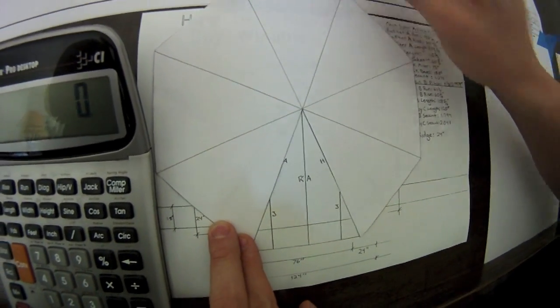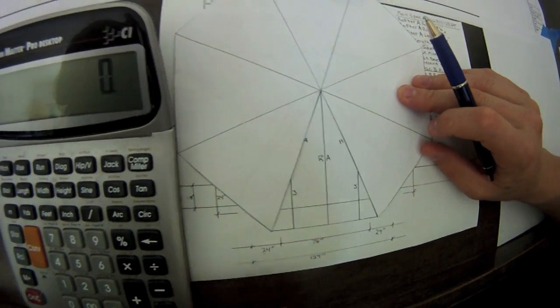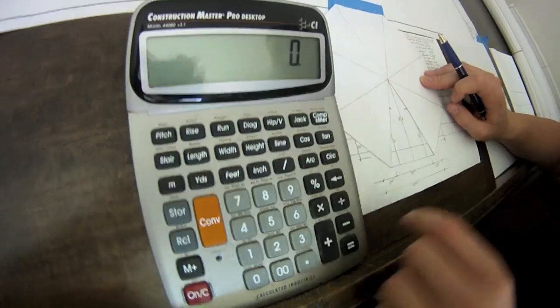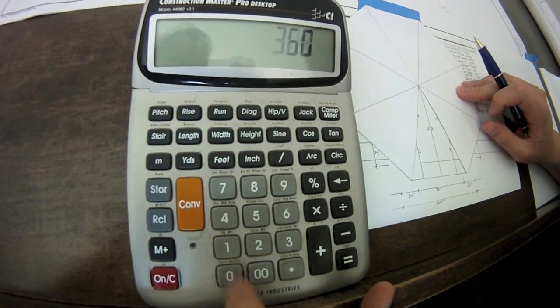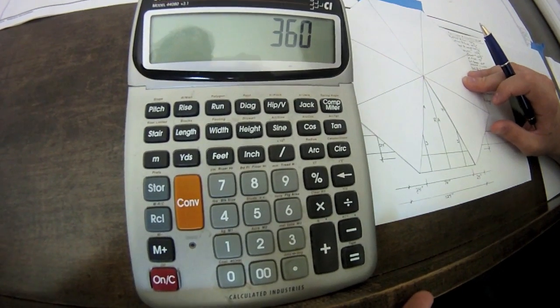So how would you come up with the angle and how do you know what angle that these hips run at? Well, that's simple math. If you come over here to the calculator and notice that in a circle you have 360 degrees, that's simple math. And you know with an octagon you have eight sides.